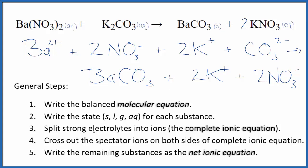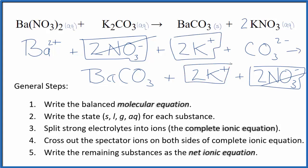So at this point, we can cross out spectator ions. They're on both sides of our complete ionic equation. If I look at the reactants, I see there's two nitrate ions right here and again in the products. So these are spectator ions. We'll cross these out. Two potassium ions in the reactants and in the products. Spectator ions, we cross them out.